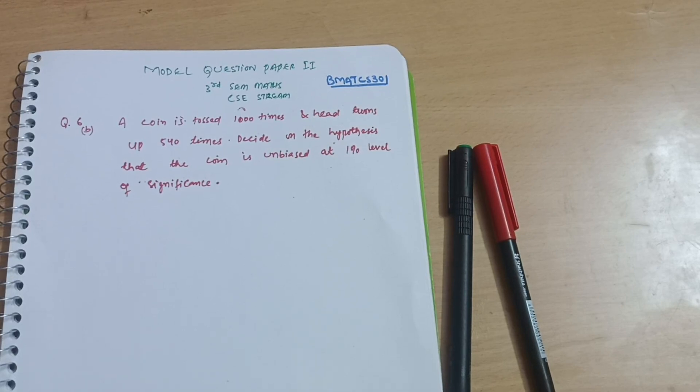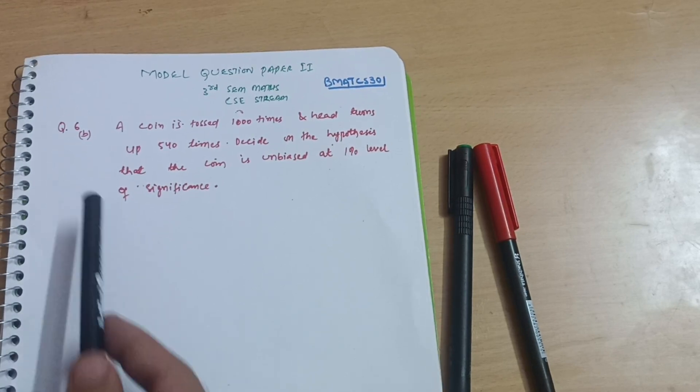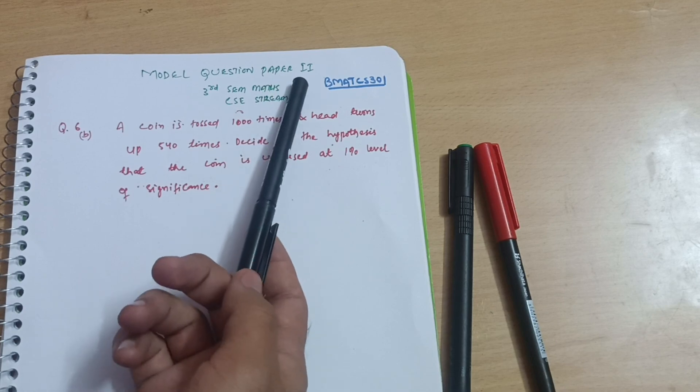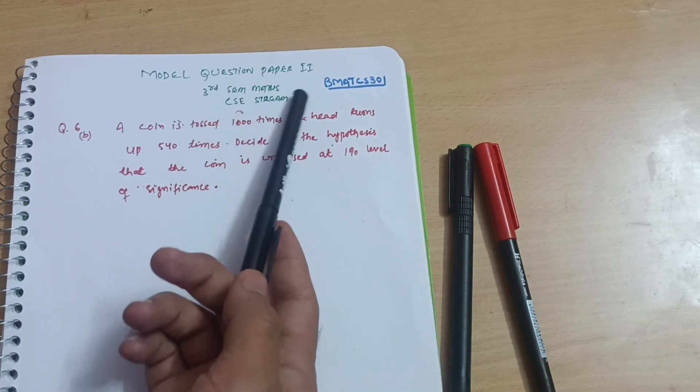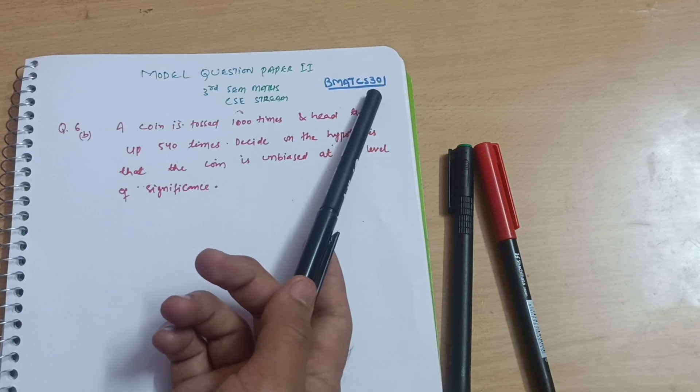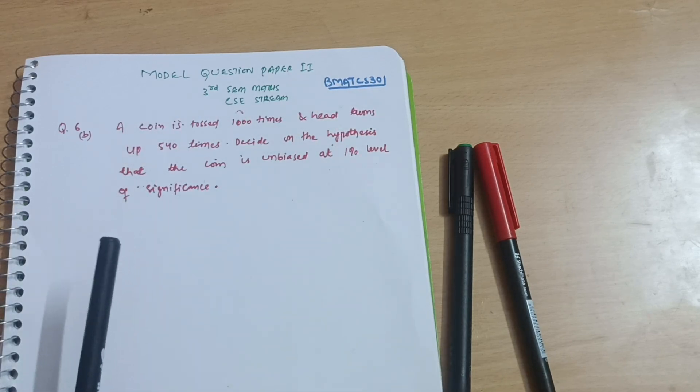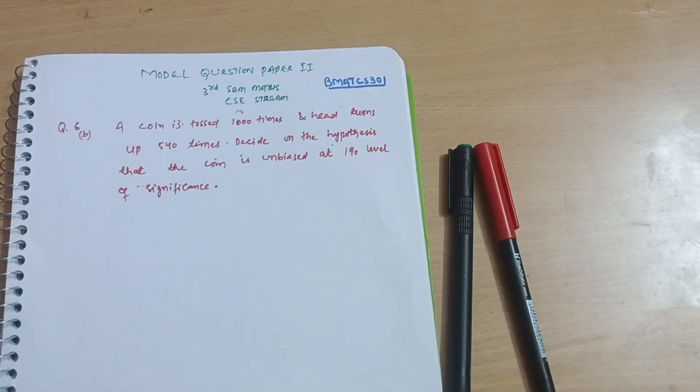Hello everyone, today in this video we will discuss question number 6b of the model question paper set 2 for third semester maths for CSC stream students, subject BMATCS301. We have solved varieties of problems; you can check the link in the description box.